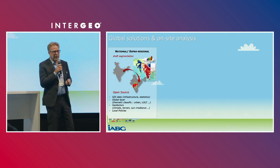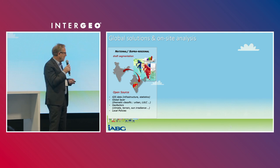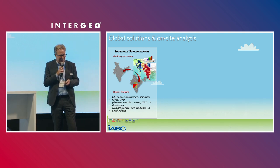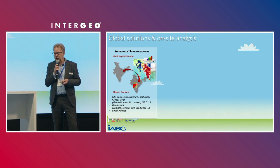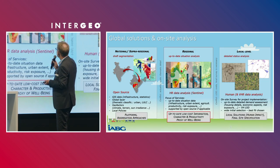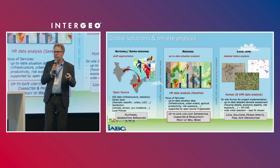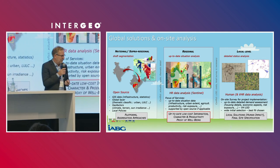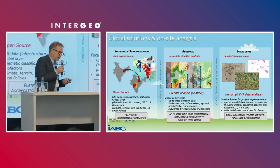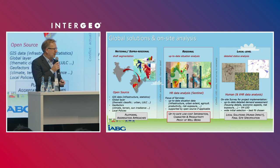For the first evaluation, on a global level we use a lot of existing data sets and layers — existing GIS data, global land cover information, and geo-factors meaning climate information. Then we go to the next scale, more regional, where we use Sentinel data to have real up-to-date information about the current situation. We also get information about risk exposure concerning the assets, and access to remote sensing data provides up-to-date and reliable information.